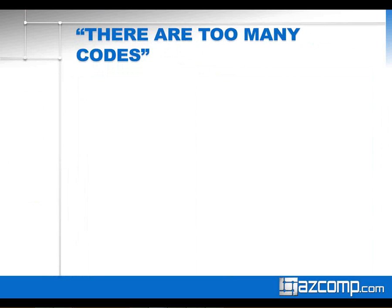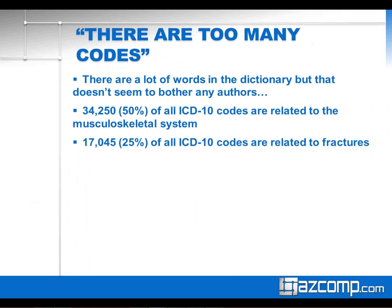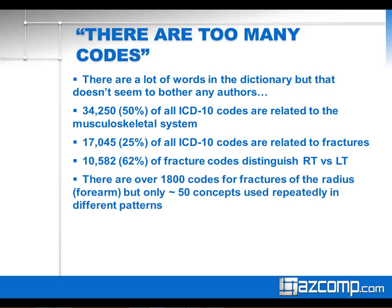One of the common things we hear is that there are simply too many codes under ICD-10. And it's easy to see why codes have expanded. There was an excellent CMS presentation where Dr. Joe Nichols said, 'There's a lot of words in the dictionary, but that doesn't seem to bother any authors.' Over 50% of the expanded codes are related to the musculoskeletal system, and 25% of those are related to fractures — over 62% of which are simply distinguishing between left and right. He pointed out there might be 1,800 codes for a fracture of the arm, but there are really only about 50 concepts being used and repeated in different patterns.